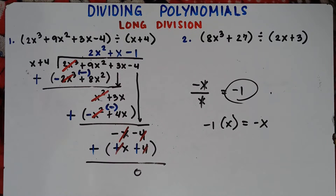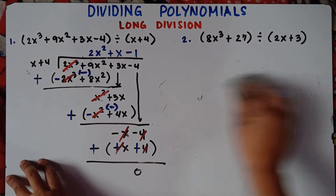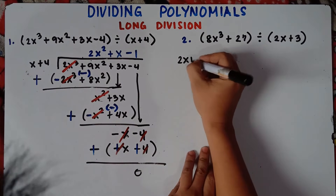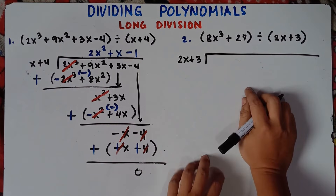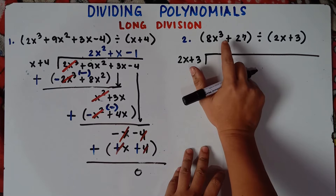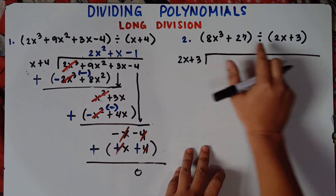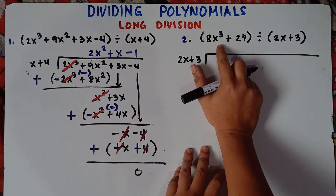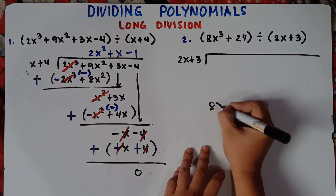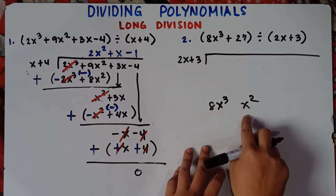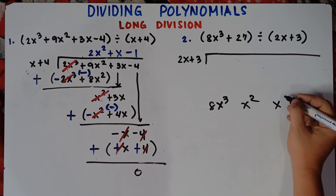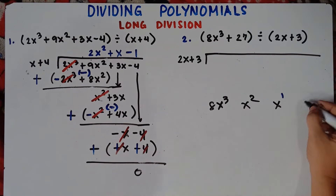Let's try number 2. The divisor is 2x + 3, and we are dividing 8x³ + 27. Check this: we have x³ but we don't have x² — that's the quadratic term — and we don't have x, the linear term. We only have the constant 27. So the terms are missing from the dividend.